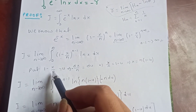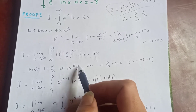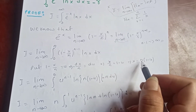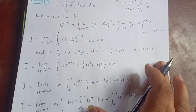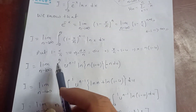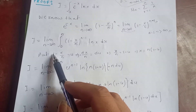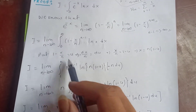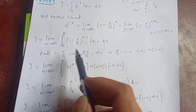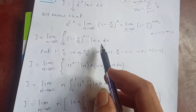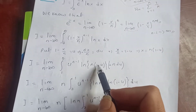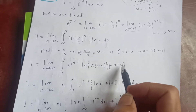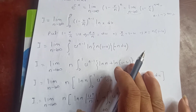Now we substitute u = 1 - x/n, so -dx/n = du. Solving for x gives x = n(1-u). When x=0, u=1; when x=n, u=0. Also dx = -n du. So the integral becomes I = lim_{n→∞} ∫₁⁰ u^(n-1) log(n(1-u)) · (-n du).